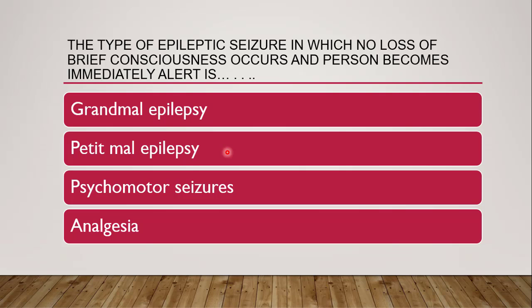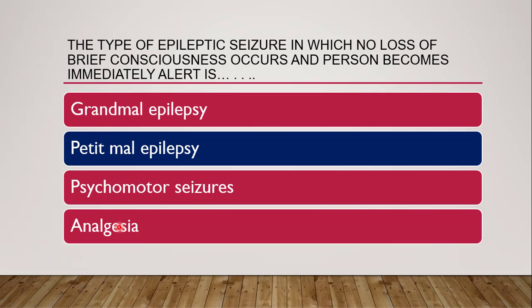Next question: the type of epileptic seizure in which no loss of brief consciousness occurs and the person becomes immediately alert — grand mal, petit mal, psychomotor, or analgesia? The correct answer is petit mal epilepsy, wherein the person becomes immediately alert after the epileptic seizure.